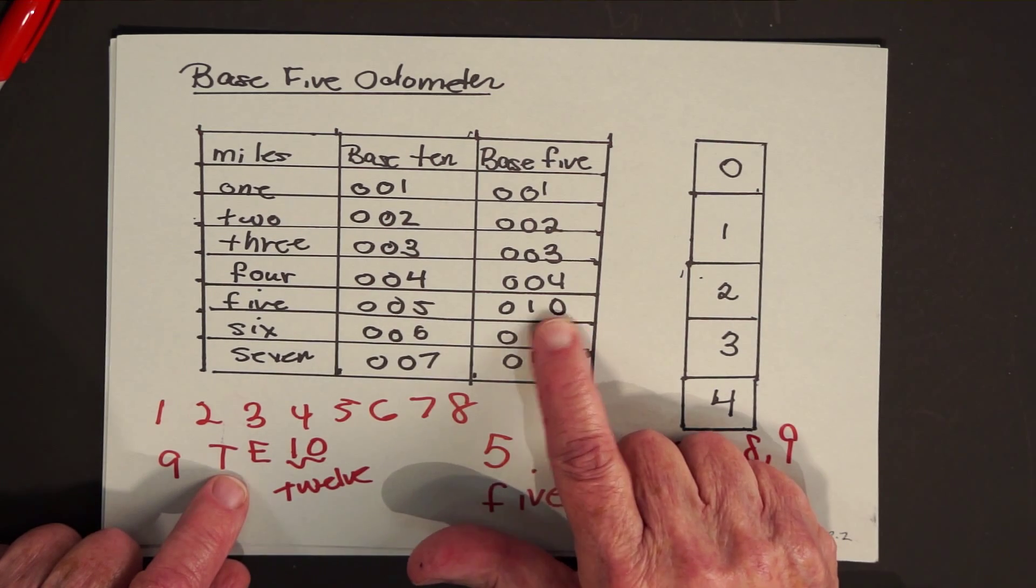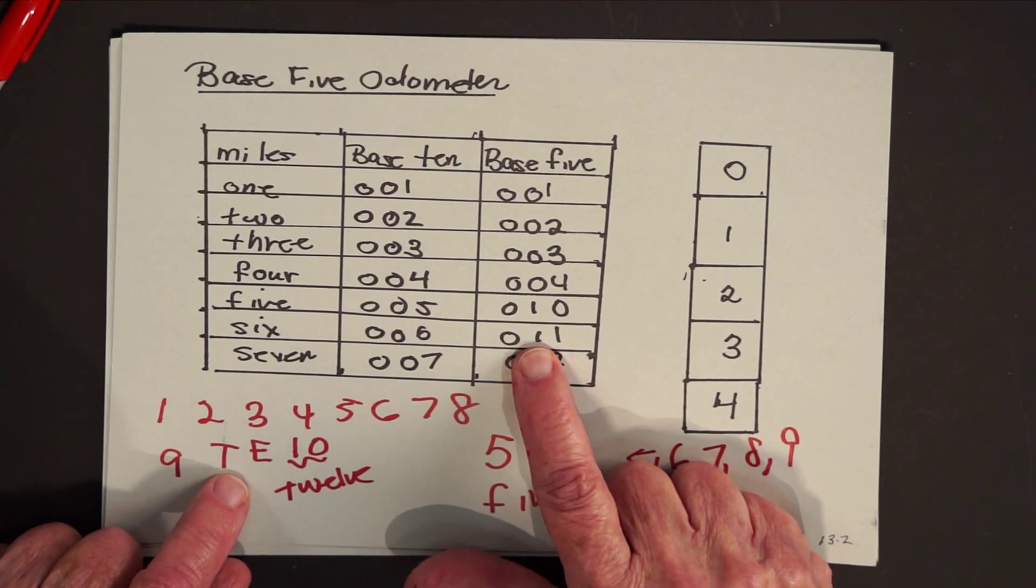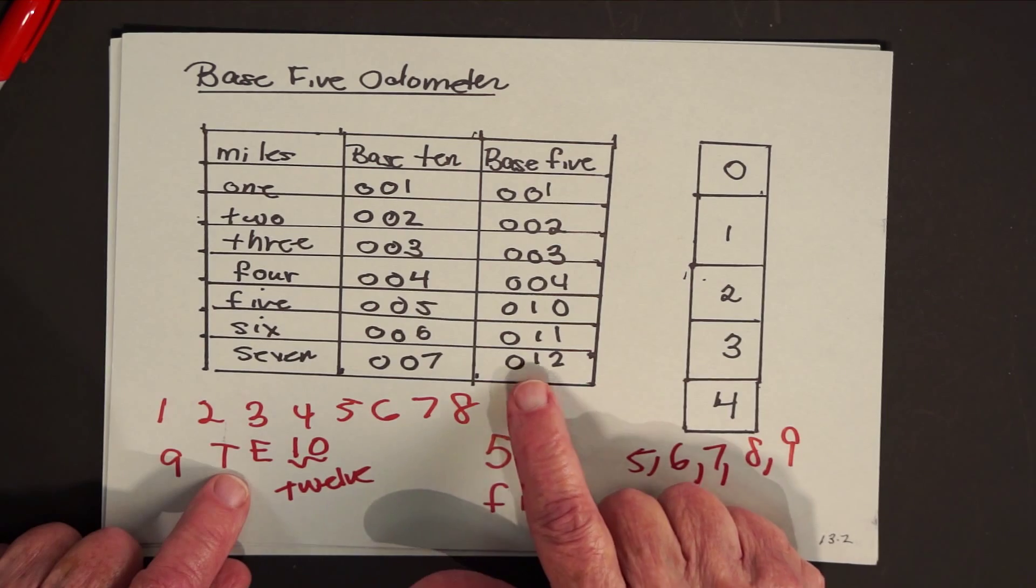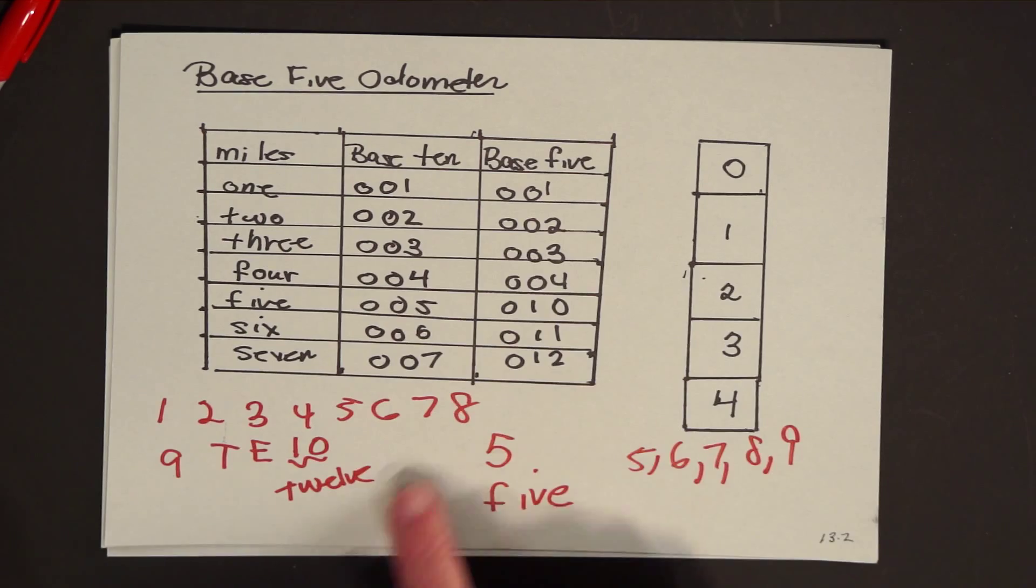And again, don't read this as 10. It's one zero, a five and no ones, one one, a five and a one, one two, a five and a two. And five plus two does equal seven.